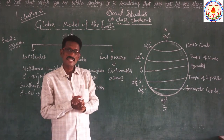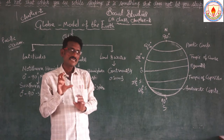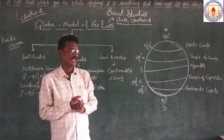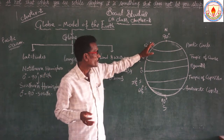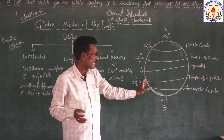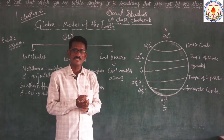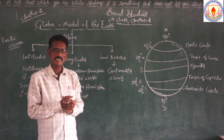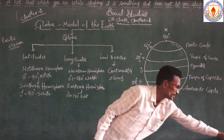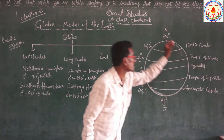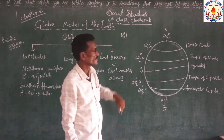Latitudes are imaginary circles. These are the important latitudes. How many latitudes are there? There are 181 latitudes.